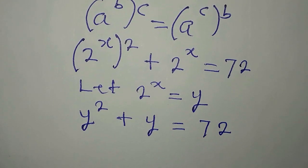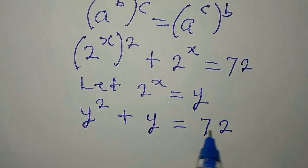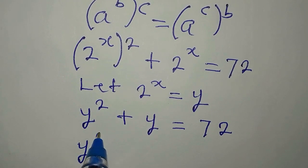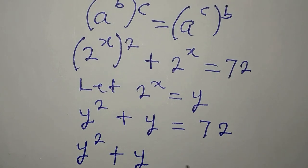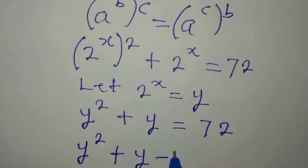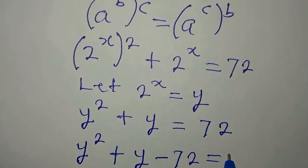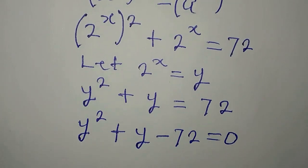The next thing I will do is bring this to the left, so I have y squared plus y minus 72 equals 0. This is a quadratic equation.